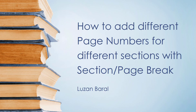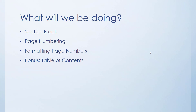and other documents that require different page numbers on a single document file. Here is the list of things I'll be covering in this video: first, we'll be creating different sections using section break; after creating sections, we'll be adding page numbers to those sections and later formatting those page numbers as required. As a bonus, I'll also be showing how to add a table of contents automatically to get pages with their respective page numbers in just a number of clicks.